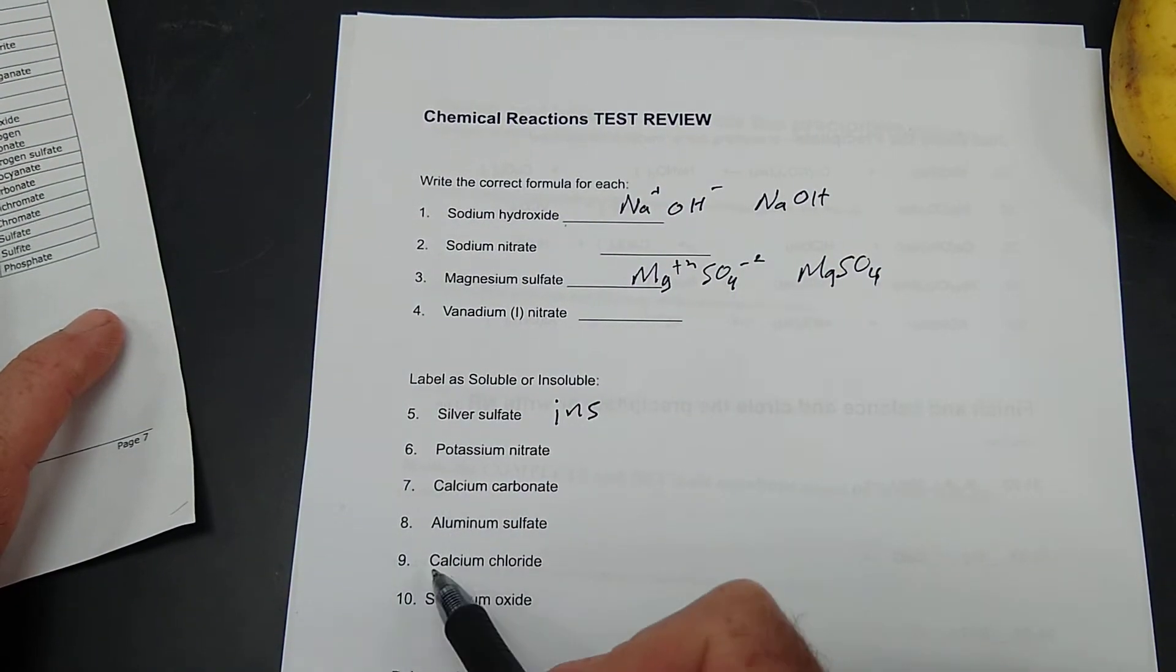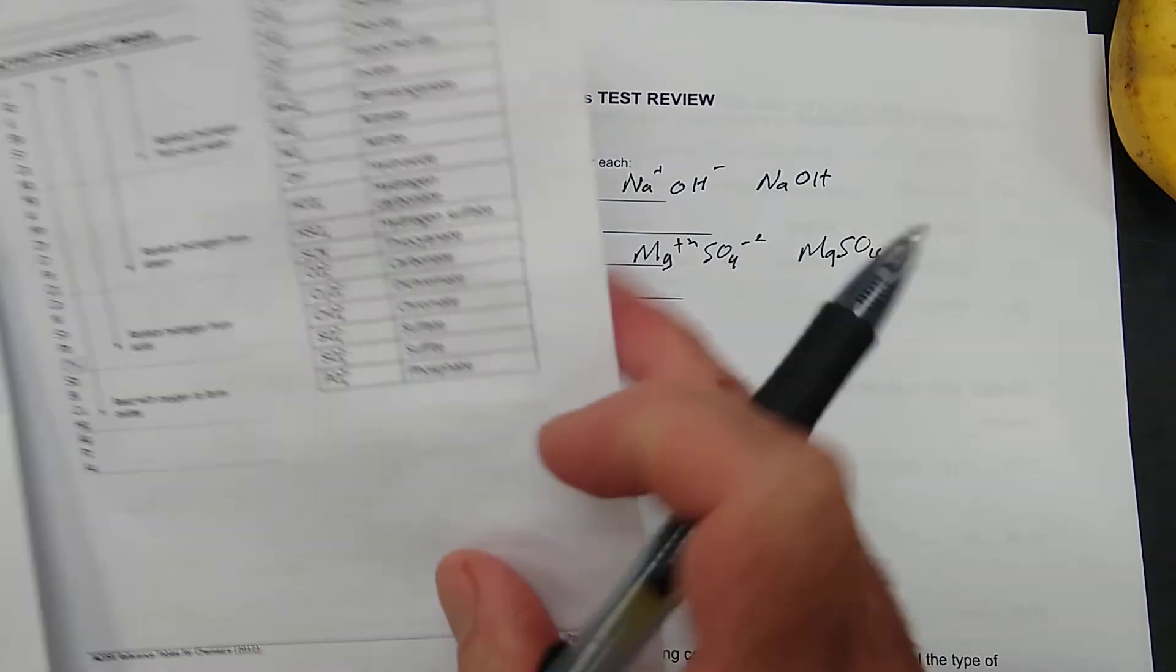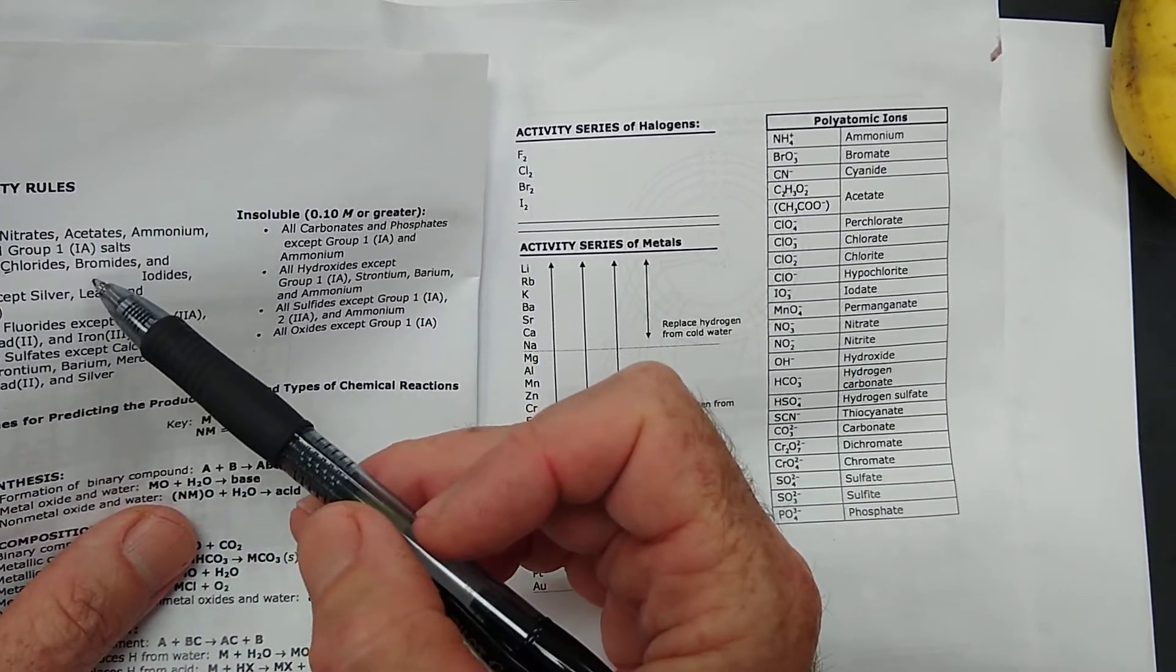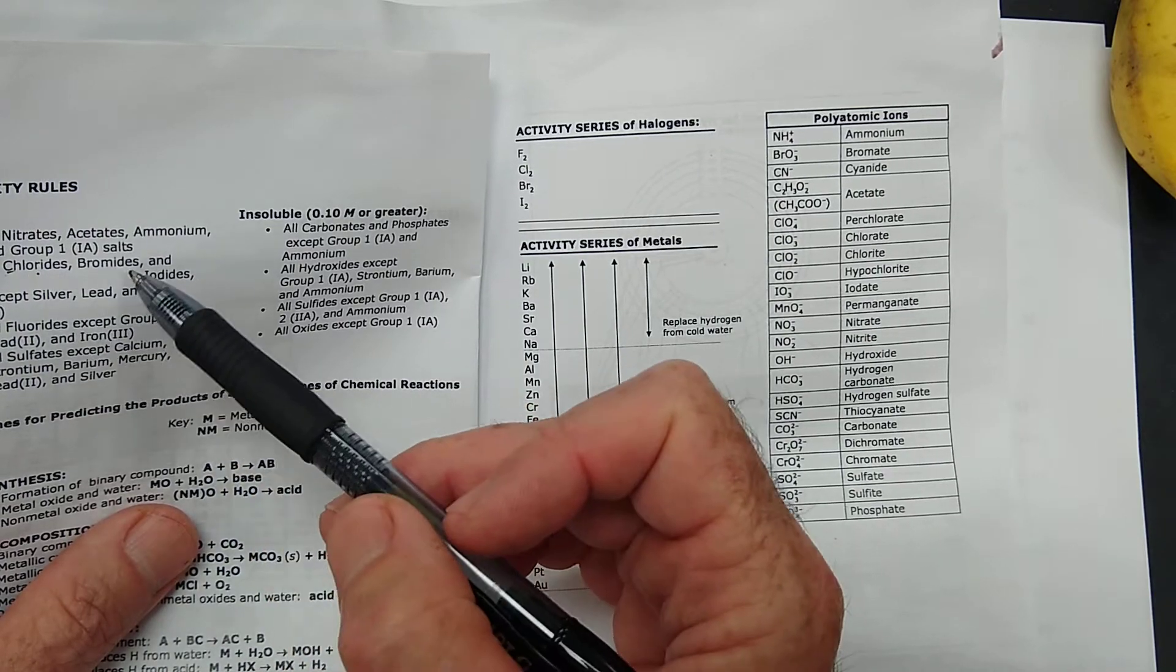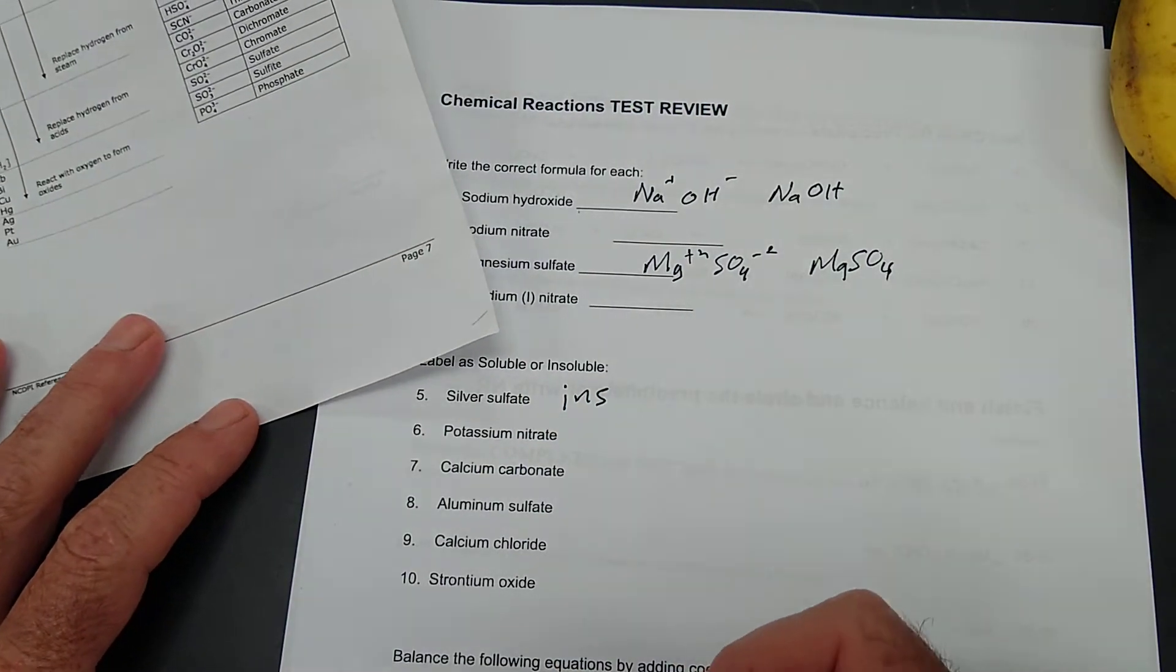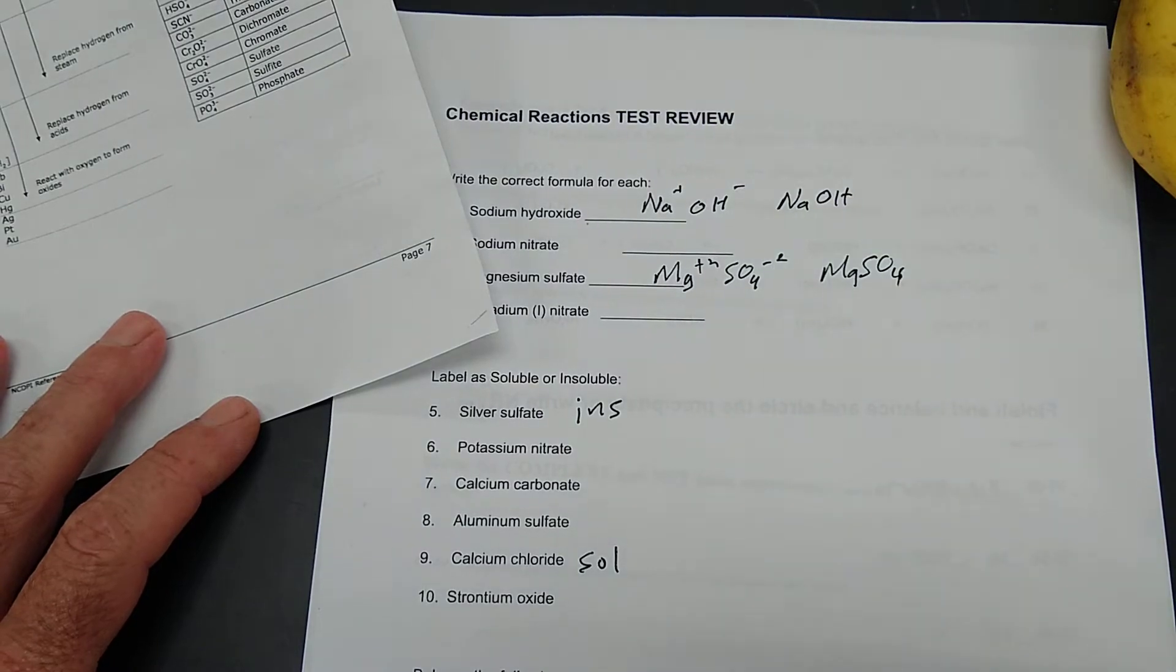Let's try calcium chloride. All chlorides are soluble except silver, lead, and mercury. Well, that's soluble then. That's not one of the exceptions.